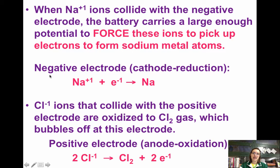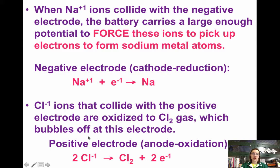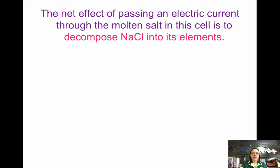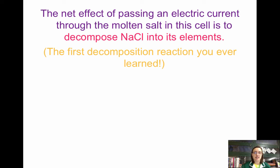Notice that the cathode is negative and the anode is positive in electrolytic cells. I only want you to know the signs of the electrodes for voltaic cells — don't worry about the signs for electrolytic cells. But you still need to know where the cathode is and where the anode is. The effect of passing a current through molten NaCl is that it decomposes NaCl into its elements.